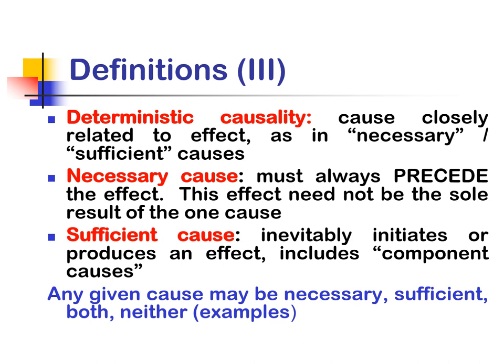Deterministic causality: causes are closely related to effect as in necessary and sufficient causes. Causes must always precede the effect, and this effect need not be the sole result of one cause. A sufficient cause inevitably initiates or produces an effect and includes component causes. Any given cause may be necessary or may be sufficient.